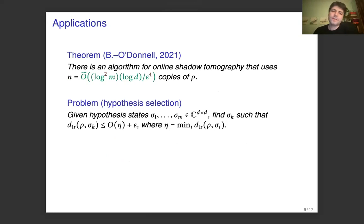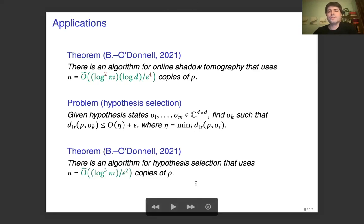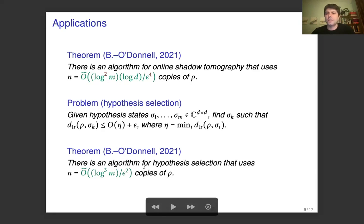Another problem we look at is hypothesis selection, which is essentially the quantum version of the classical hypothesis selection problem. We're given m hypothesis states sigma_1 to sigma_m, and we have measurement access to copies of a state rho which is unknown. We want to find a sigma_k that is closest to rho in trace distance among all the hypothesis states. You can reduce it directly to shadow tomography and obtain essentially the same sample complexity. But we also showed that there's an algorithm for hypothesis selection that doesn't use shadow tomography, which uses log^3(m) over epsilon squared copies of rho — a slight improvement in epsilon dependence at the cost of an extra log(m) factor.